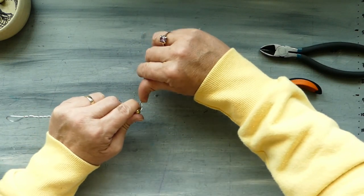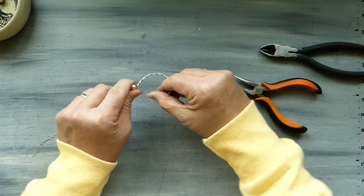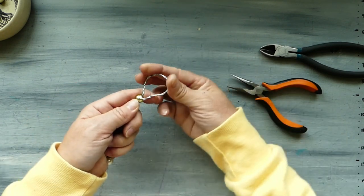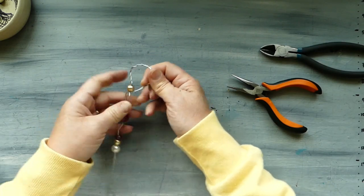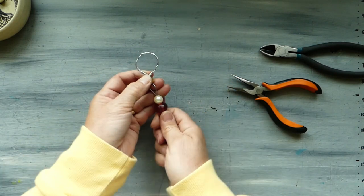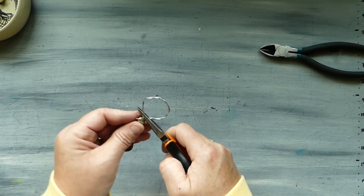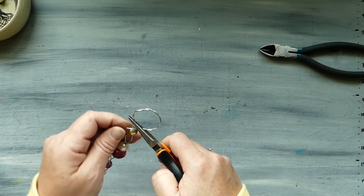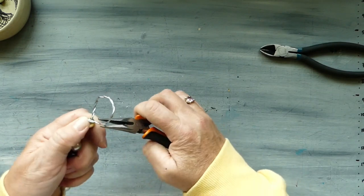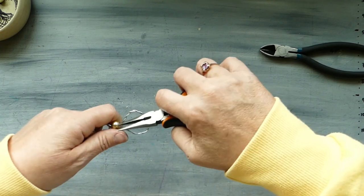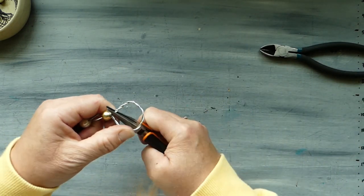And then we're going to just start to curve it gently until we've got our little loop on the end and straighten that out a bit. Okay, just like that. And then we just take our pliers and we try and manipulate this end piece so that it is curved and we'll go around.